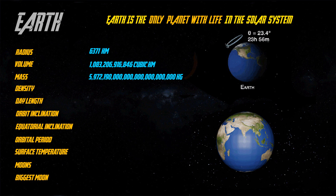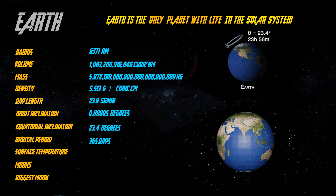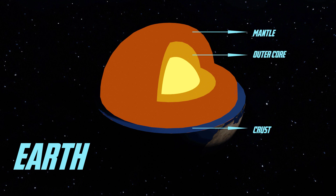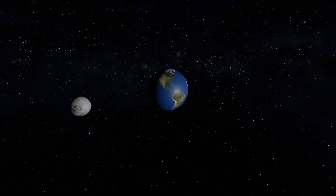Earth takes 365 days to complete its rotation around the Sun. It has mainly four layers. The Moon completes its rotation around the Earth in 28 days.